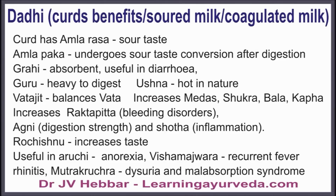Dharoshna, or raw milk drawn directly from the udder to the mouth, is similar to nectar, provided the cow is perfectly healthy without any infection. Curd has sour taste. It is absorbent, useful in diarrhea, heavy to digest, hot in nature, balances vata, increases fat and strength, increases kapha and bleeding, worsens bleeding disorders, increases digestive strength, and worsens inflammation.